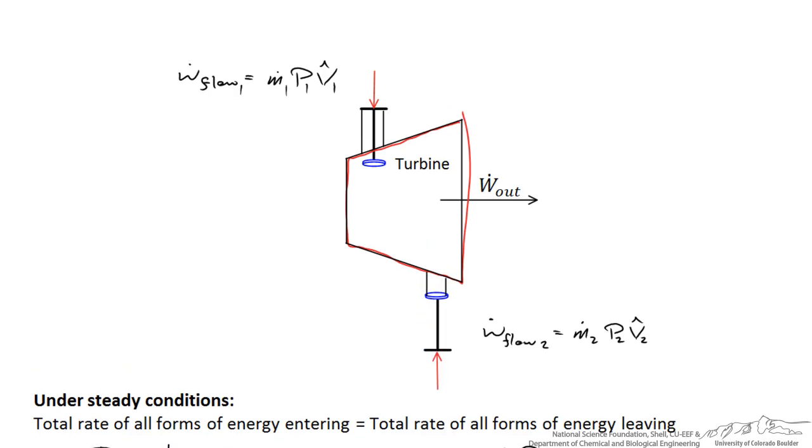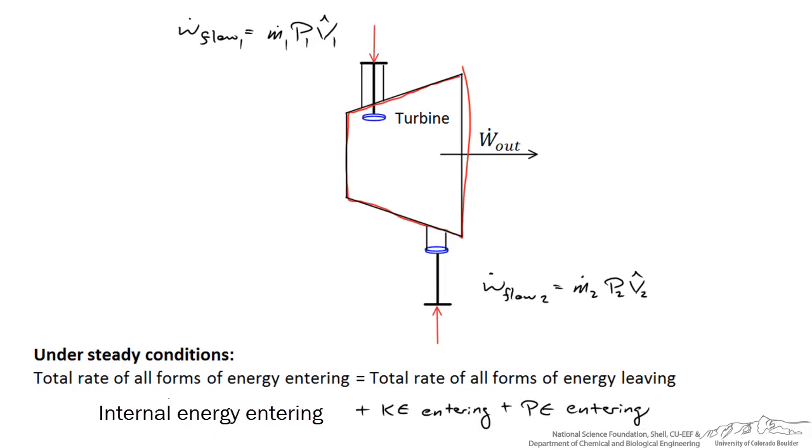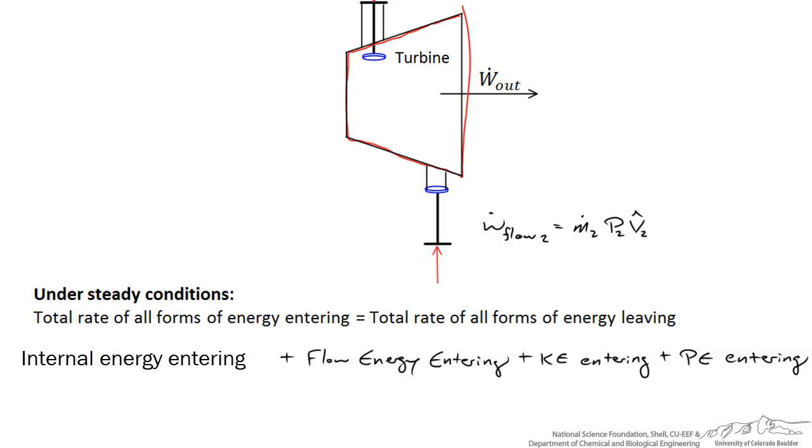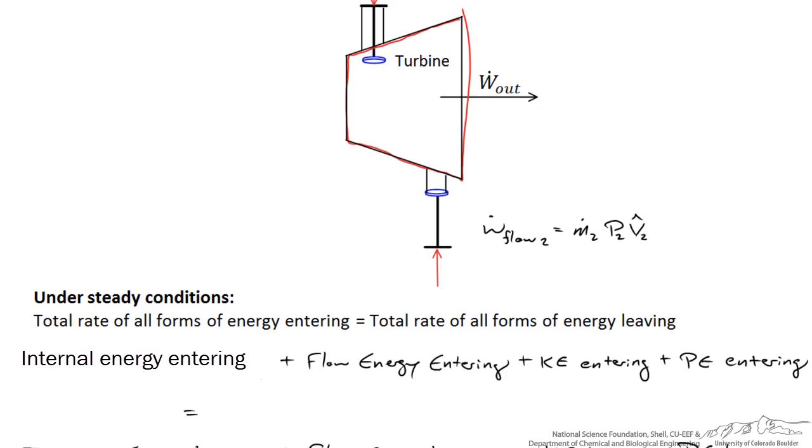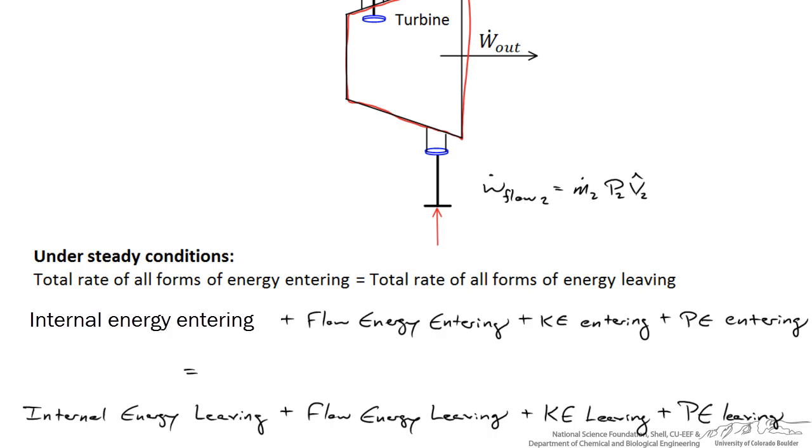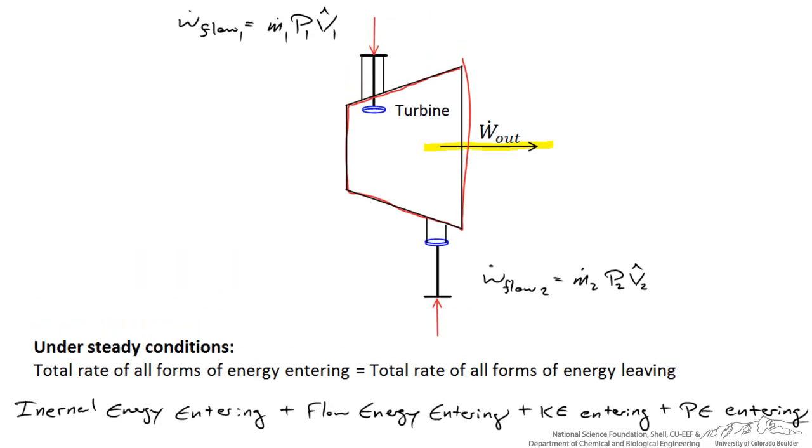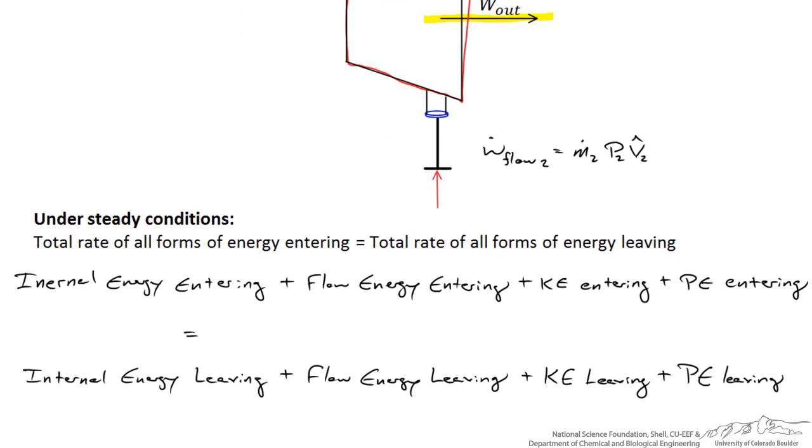Here we see fluid pushing this plunger along as it exhausts the turbine. So if we look at our energy balance, we've got internal energy entering associated with molecular interactions. In addition to kinetic and potential energy, we also need to account for this flow energy entering. So here are the four forms of energy entering the system. At steady state, that has to equal the total rate at which all forms of energy leave the control volume. Those four equal the internal energy leaving, the flow energy leaving, plus any kinetic and potential energies leaving. But there's also one other form of energy leaving, so I'll say plus shaft work. With a turbine this is what we're primarily interested in.